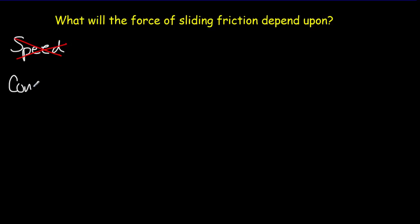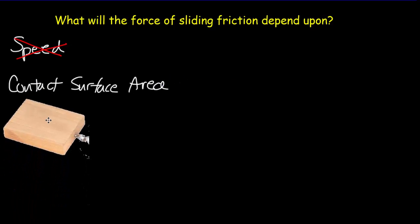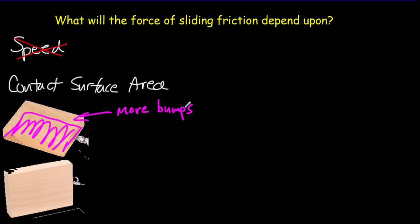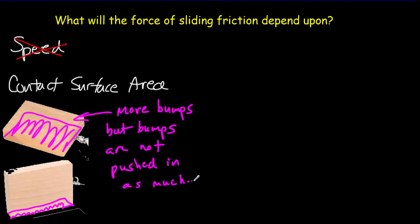A second guess might be the contact surface area. If I've got two blocks — one lying flat and the other sitting upright — would I get the same or different friction? If we think about those microscopic bumps: the flat block has a larger surface area, meaning more bumps, but those bumps don't have as much pressure on them. The weight is distributed over a larger area, so even though there are more bumps, there's less pressure. These effects cancel out, and contact surface area does not have an effect.